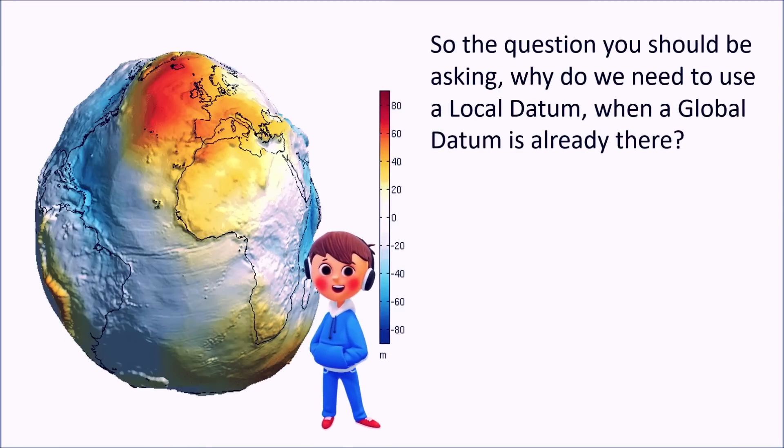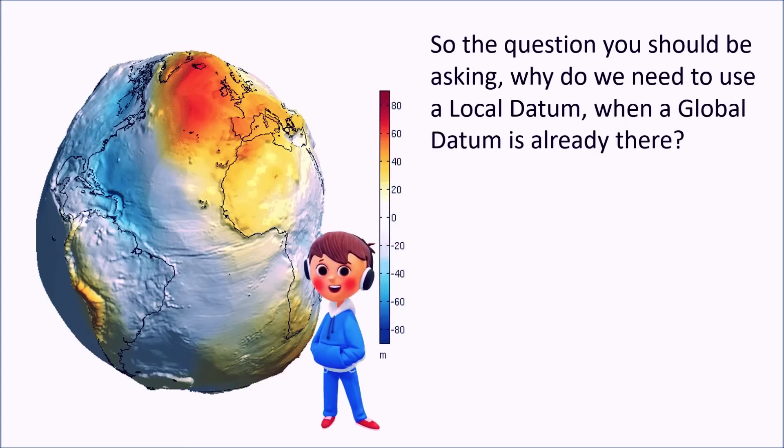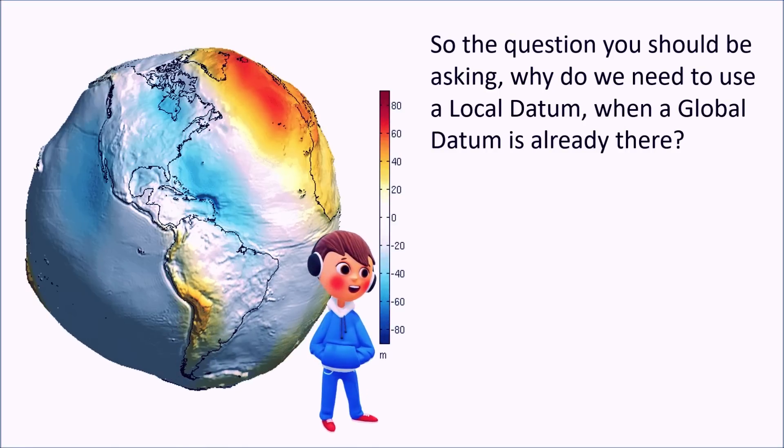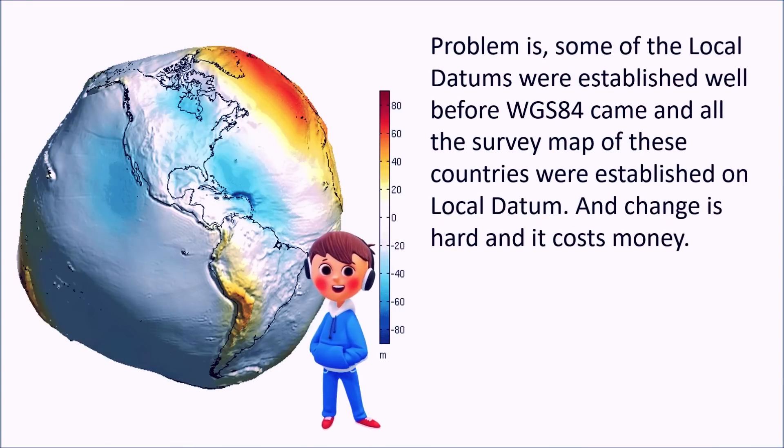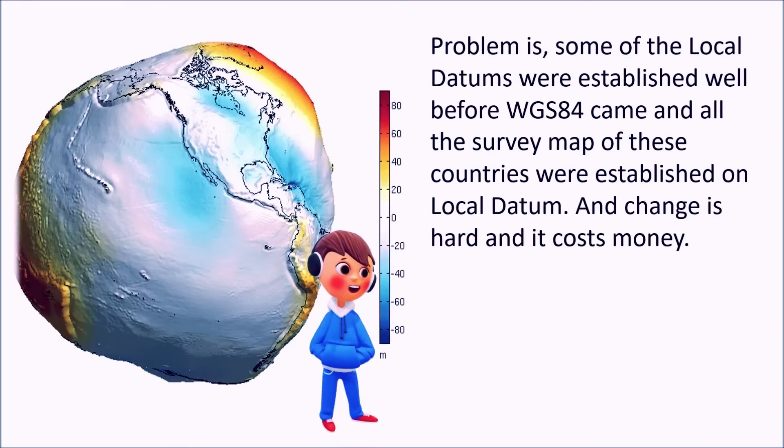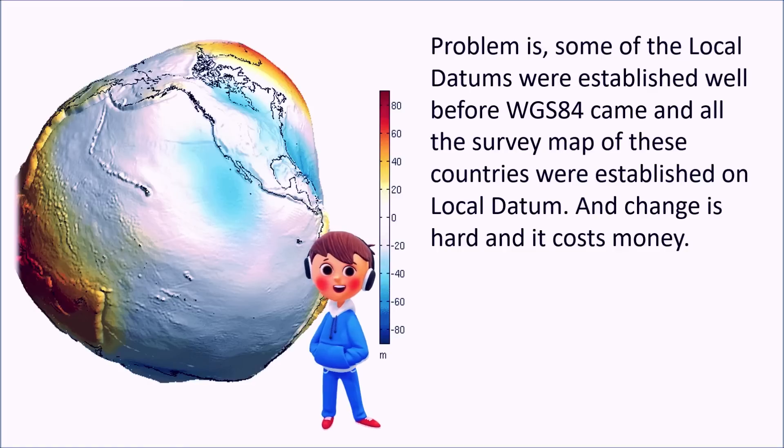So the question you should be asking - why do we need to use a local datum when a global datum is already there? Problem is some of the local datums were established well before WGS-84 and all the survey maps of these countries were established on local data, and change is hard and it costs money.